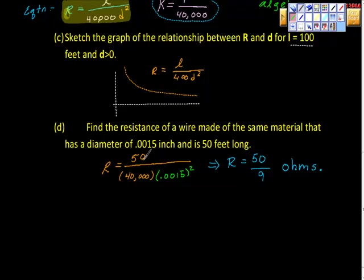So I'm just going to fill in the blanks again. L was up here. So we put in 50 for the length. This 40,000 was part of the constant of variation. Here we have the diameter and it says for us to square it. And if you do your algebra, this is a great place to use a calculator that we're going to find out when we simplify this, that the resistance is 50 over nine.